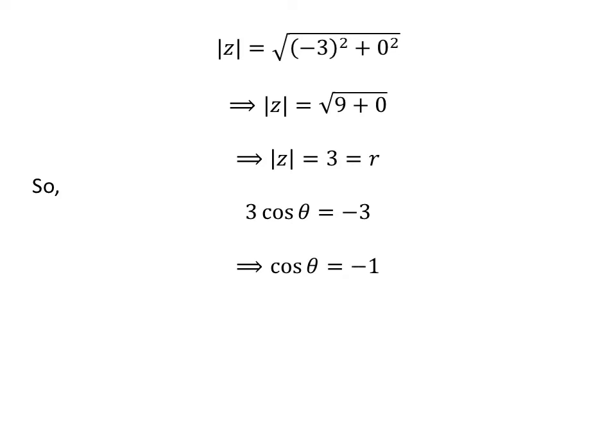Dividing the above equation by 3 gives us cosine of theta is equal to minus 1. Similarly, we get sine of theta is equal to 0.